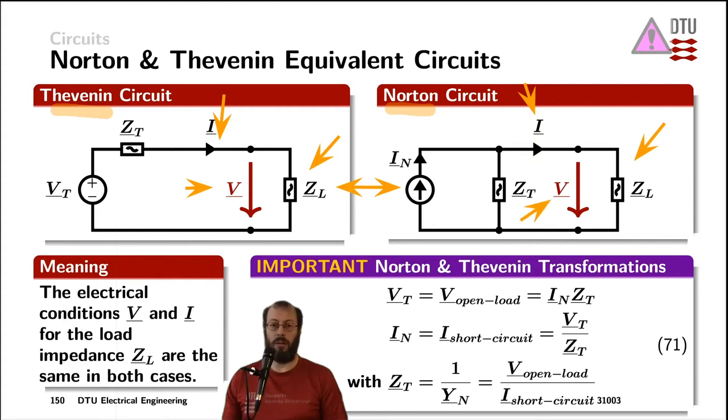Now the load impedance can be a whole other circuit. It is just summarized into a single impedance here called ZL, where the index L stands for load. ZL is just used as an equivalent impedance here.